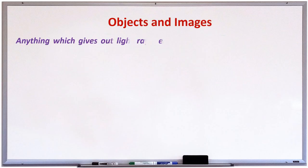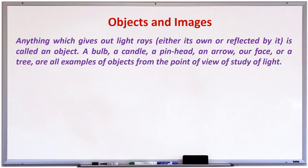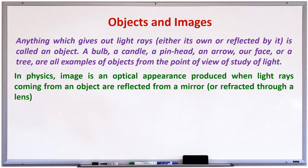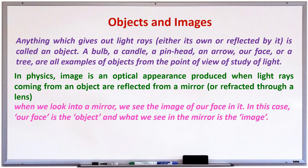Objects and mirrors — anything which gives out light rays, either its own or reflected by any other, is called an object. These are the examples for objects. In physics, an image is an optical appearance produced when light rays coming from an object are reflected from a mirror or refracted through a lens. When we look into the mirror, we see the image of our face in it. In this case, our face is the object and what we see in the mirror is the image.